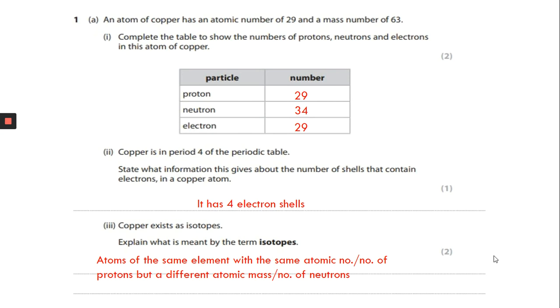Question two. Copper is in period four of the periodic table. State what information this gives about the number of shells that contain electrons in a copper atom. Hopefully you guys can remember that the period tells us the number of electron shells. The group number tells us the number of electrons in the outer shell.